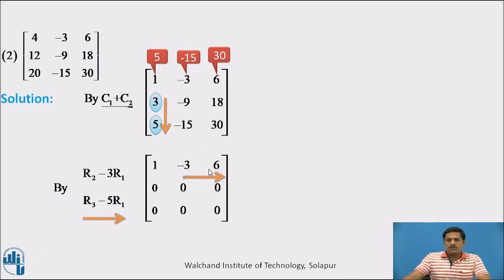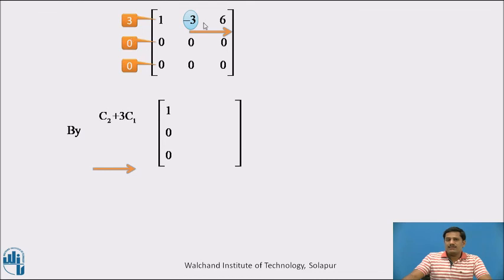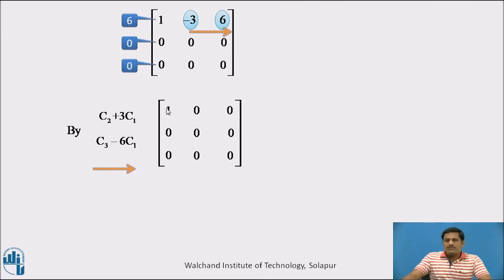Now we reduce these two elements to 0 using column number 1. First, minus 3: we apply the column transformation C2 plus 3C1. There is no change in column 1; multiplying column 1 by 3 gives these entries, and when we add the two columns this entry reduces to 0 and remaining entries are as is. Now except the first entry, all entries are 0 — this is our required normal form.